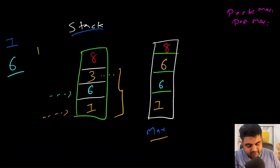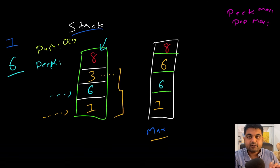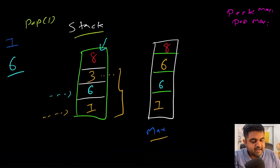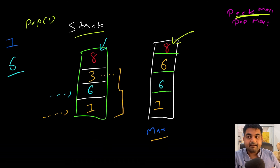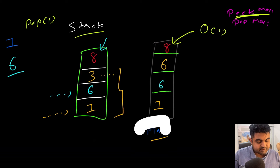We did the push operation in O(1) time — no issues with that. We can also do the peak operation in O(1) time. The pop operation can also be done in O(1) time. And we can do peekMax as well in O(1) time, because this is also being maintained in constant time. So we took care of four operations in O(1) time just by simply using these two different stacks.